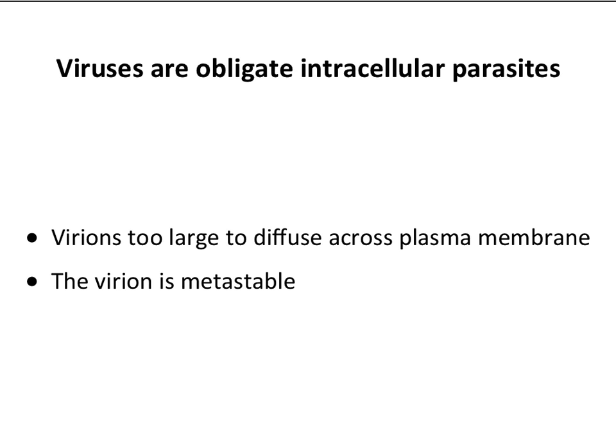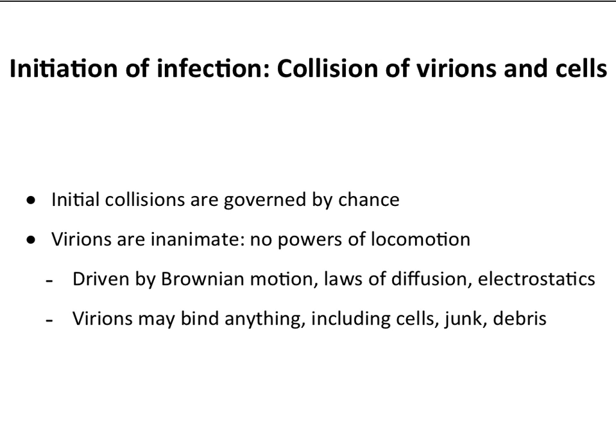Viruses are floating around in the air and fluids. When they get into your respiratory tract, they're diffusing and moving around, and their collision with a cell is purely by chance — they are inanimate, with no means of locomotion, driven by diffusion, Brownian motion, and electrostatics. They can bind anything: food, mucus, many different things. That's why numbers of viruses are important for initiating an infection — usually you don't start an infection with just one because there's so much other stuff that viruses can bind to.